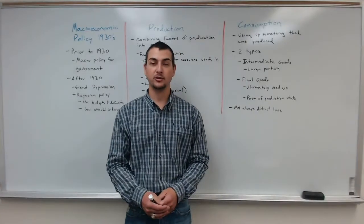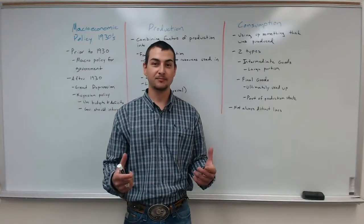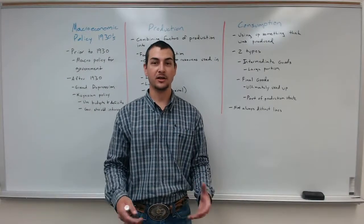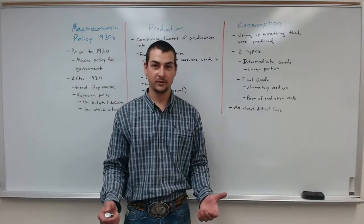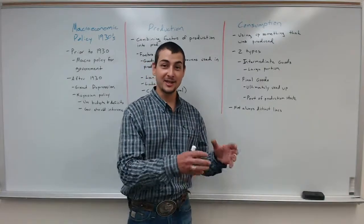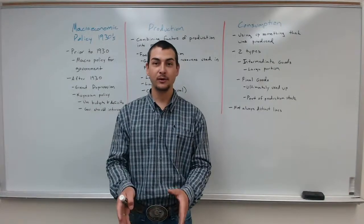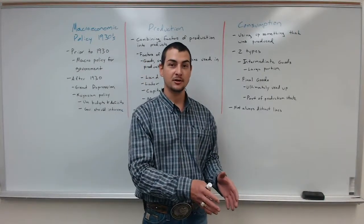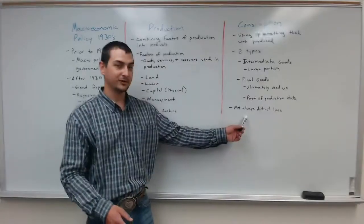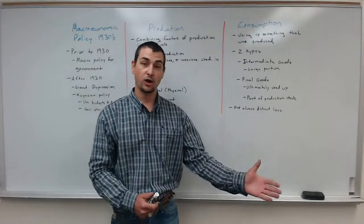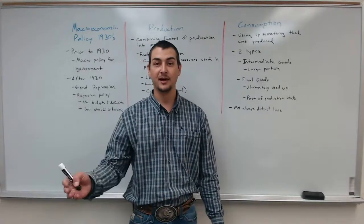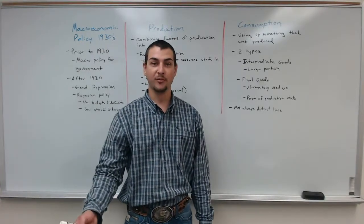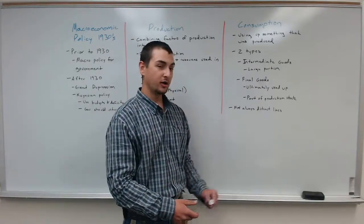Take the bread example again: if you pull out a loaf of bread and eat a slice, it's a final good. But if a deli takes that same loaf of bread and makes sandwiches out of it, the sandwiches become the final good and the bread becomes an intermediate good. The lines are not always distinct — it's not black and white. You can't say a loaf of bread is always a final good, and you can't say a car used by a traveling salesman is always a final good if it's used in the production process.